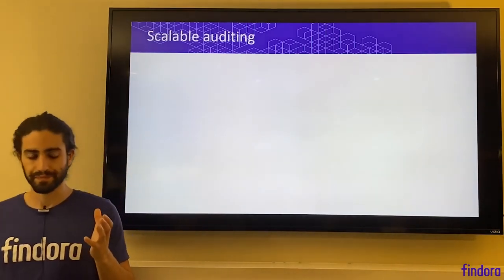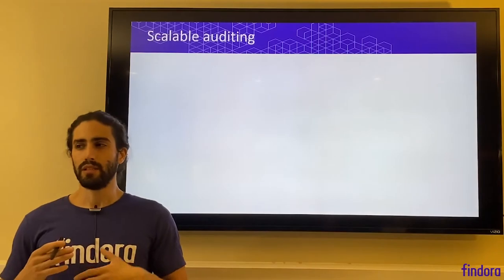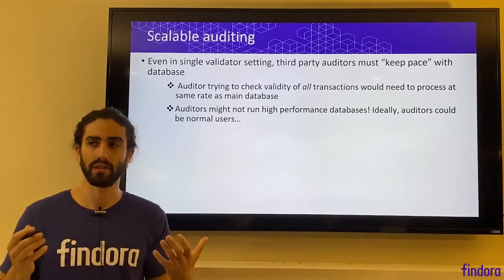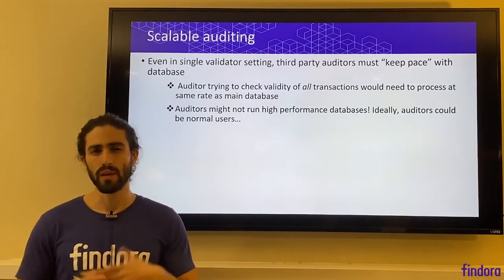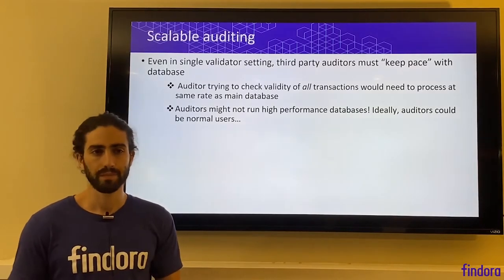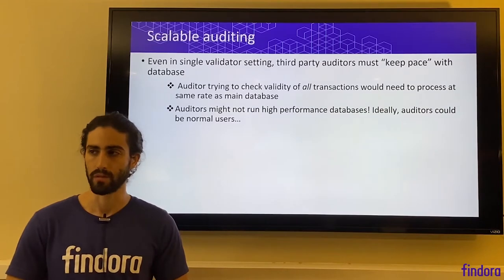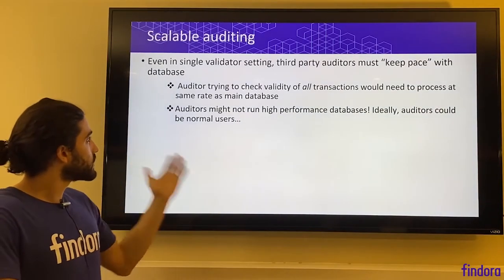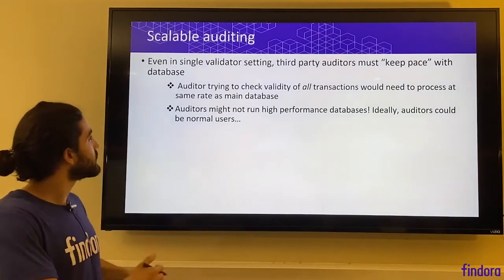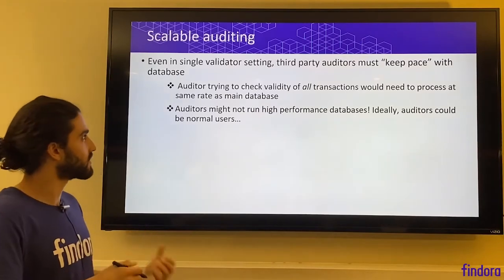Even in the setting of a single validator, we're still concerned about scalable auditing. Remember that even in the single validator setting, there would be many third-party auditors watching this single validator and making sure it's processing transactions correctly. Otherwise the blockchain property of transparency would not be fully utilized. Things like immutability are only achieved if third-party auditors are really doing the work to check transaction validity in order to catch the main database manager if it does something wrong. Auditors who are trying to check the validity of all transactions would need to process at the same rate as the main database in order to check that the validator is operating correctly.